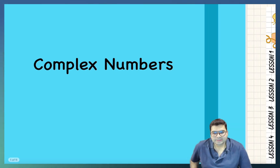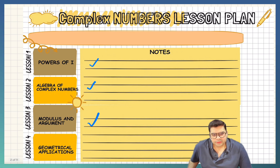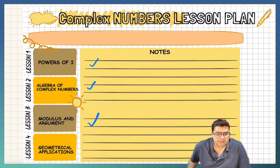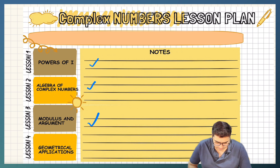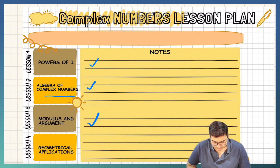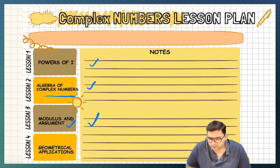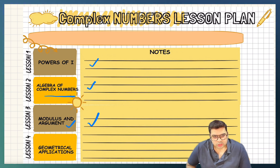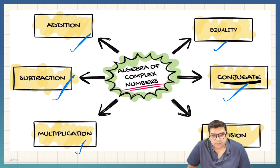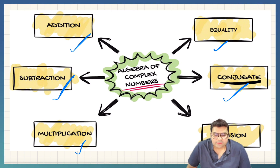Let us continue complex numbers. I want you to go through the complex numbers lesson plan before we begin. There are parts of i that we have already covered. The next part would be algebra of complex numbers, which we will complete in today's module. Then we have modulus and argument of complex numbers, which is completely new. And then we have geometrical applications. Let us quickly talk about algebra of complex numbers — there are multiple operations that can be applied to complex numbers.